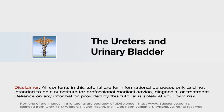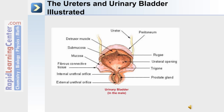Now let's move on to discuss other components of the urinary system, including the ureters and the urinary bladder. Surrounding the bladder is a peritoneum, and the thick muscular layer of the bladder is known as the detrusor muscle. There is also a submucosa and mucosa layer that contains fibrous connective tissue. Inside the urinary bladder are rugae, or folds.